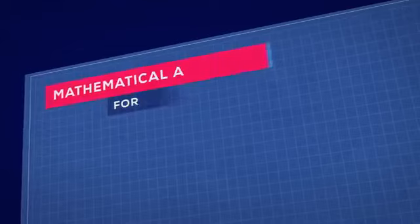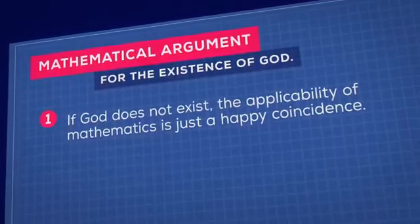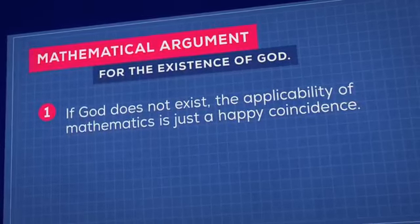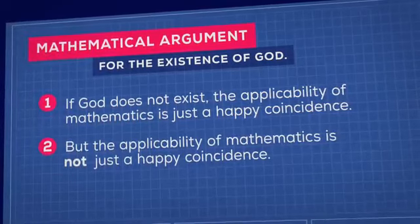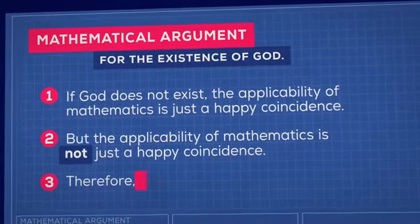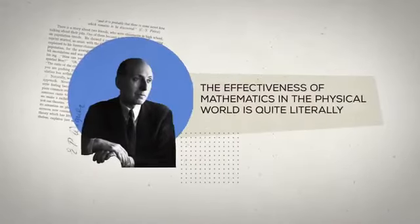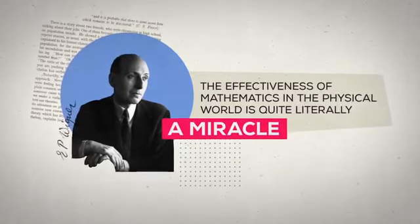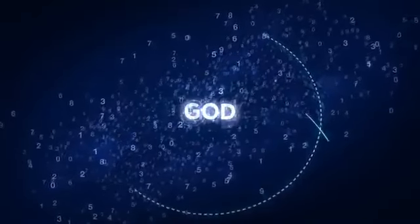All of this adds up to an argument for the existence of God that goes like this. If God does not exist, the applicability of mathematics is just a happy coincidence. But the applicability of mathematics is not just a happy coincidence. Therefore, God exists. Eugene Wigner was right. The effectiveness of mathematics in the physical world is quite literally a miracle, which is best explained by the existence of God.